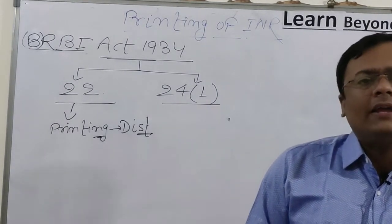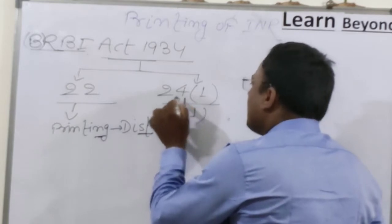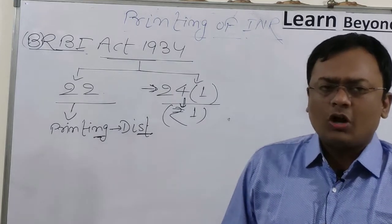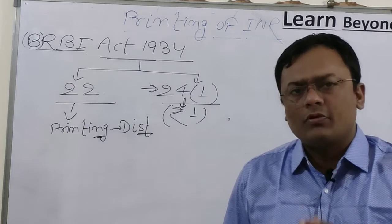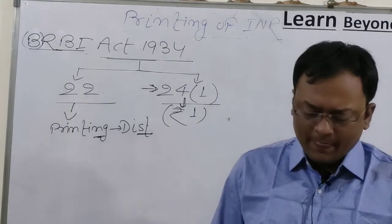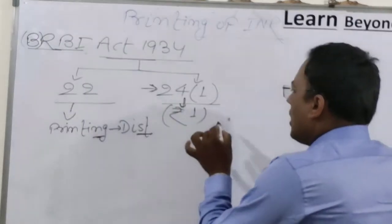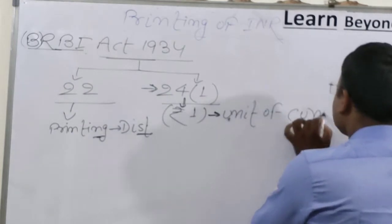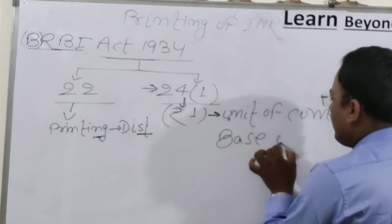All currency printing is done by RBI, except the one rupee note. RBI does not print the one rupee note. This comes under RBI Act 1934 Section 24 Subsection 1. Now you should know by what different names we refer to the one rupee note. First, it is called the unit of currency or base of currency.